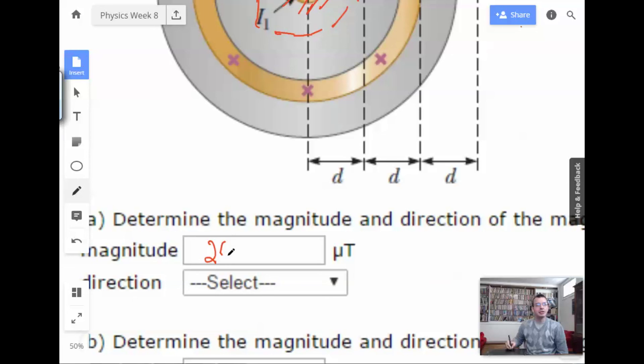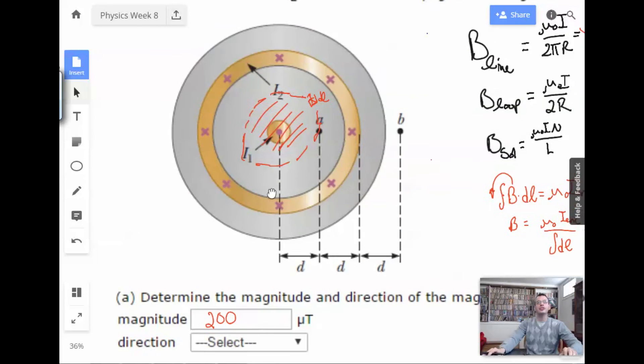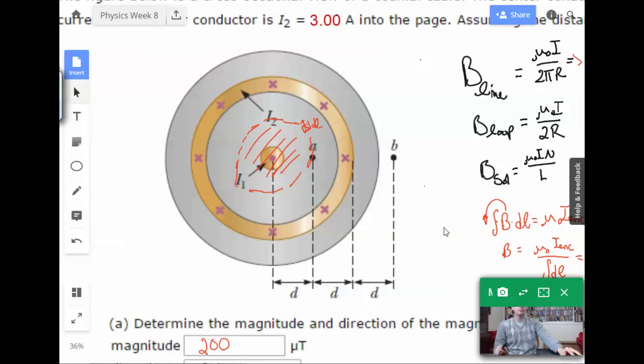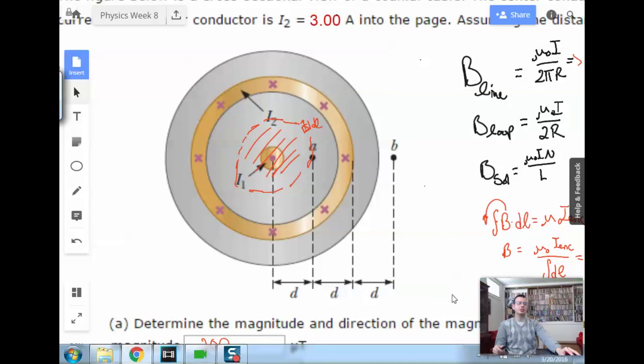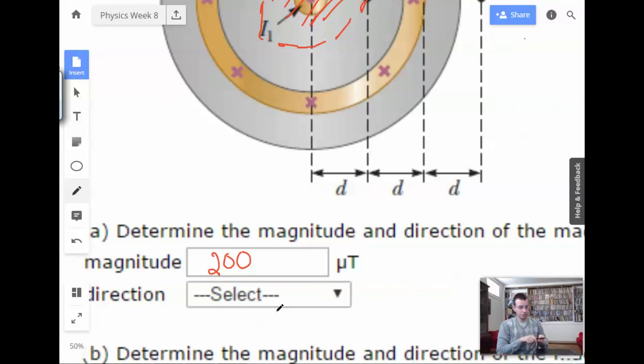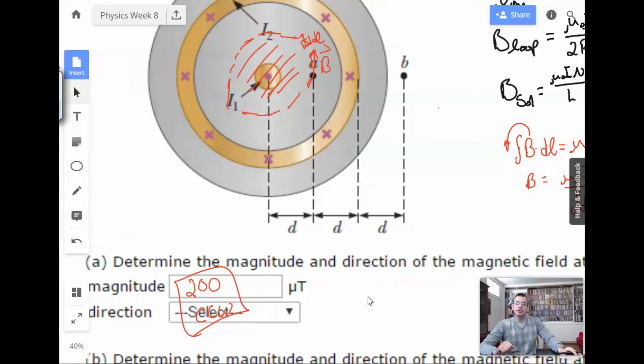So, I'm going to write here 200. And up here, we're going to find the direction. Right-hand rule. Place your thumb along the direction of the conductor. We have direction of magnetic field. Wrap your fingers. And we're going to have a magnetic field going this direction. Place your thumb along the wire. Wrap your fingers like that. So, that is going to be counterclockwise. CCW. 200 counterclockwise.